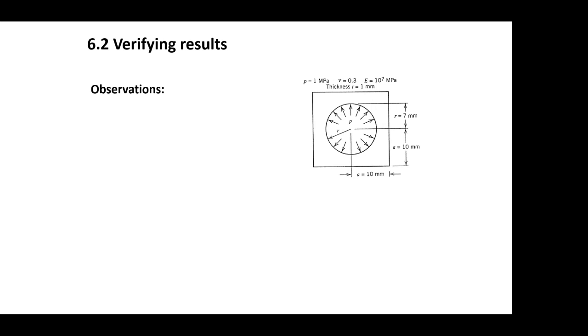Let us think in terms of this example. We have a plain strain case — a pipe running through some material. The pipe diameter is 7 millimeters and there is internal pressure p, which is 1 megapascal. The thickness of the material considered is 10 millimeters. The material has a Poisson ratio of 0.3 and an elasticity modulus of 10 to the power 7 megapascal. The thickness in the out-of-plane direction is 1 millimeter.